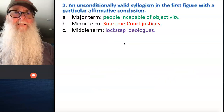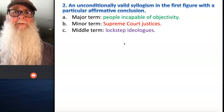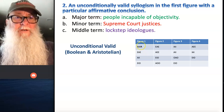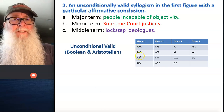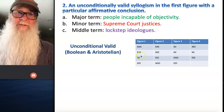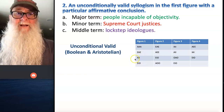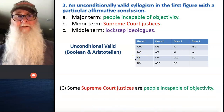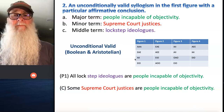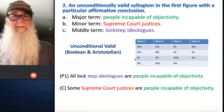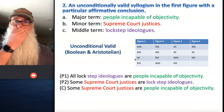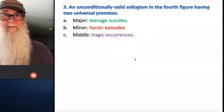Number two: an unconditionally valid syllogism in the first figure with a particular affirmative conclusion. When we go and look at our chart of figures, we're looking for the mood in figure one that has a particular affirmative conclusion — and that's going to be AII. So our conclusion is some Supreme Court justices are people incapable of objectivity, our major premise is all lockstep ideologues are people incapable of objectivity, and our minor premise is some Supreme Court justices are lockstep ideologues.